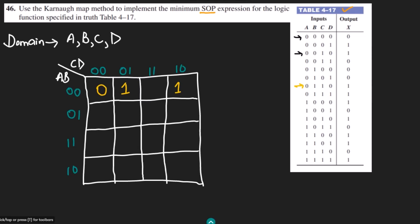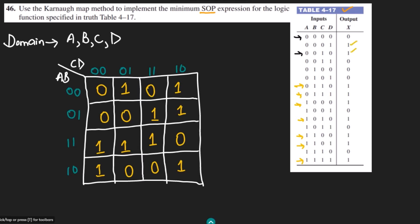Similarly, 0110 maps to 1, and 0111 is 1. Then 1000 is 1, 1100 is 1, 1101 is 1, and 1111 is 1. All other terms are 0s. Counting all the 1s: 1, 2, 3, 4, 5, 6, 7, 8, 9 — so there are 9 terms that are 1.